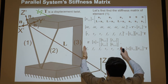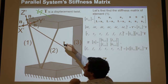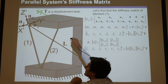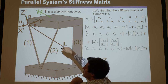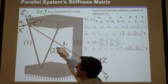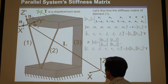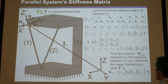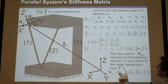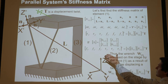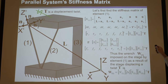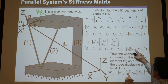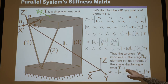This is now the wrench vector defined with respect to the local coordinate system, resulting from trying to move this stage with a displacement twist. That's the resisting wrench vector that this element will impart on the stage with respect to this local coordinate system.